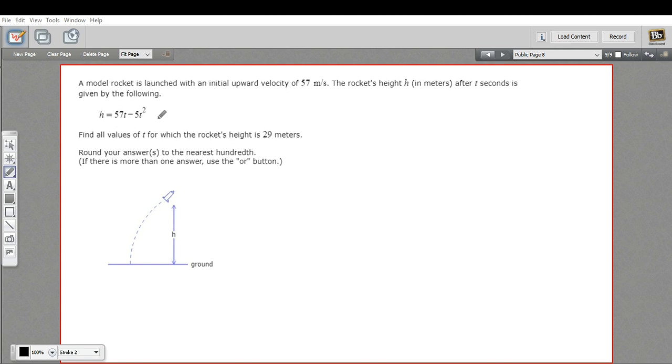Find all the values for t for which the rocket's height is 29 meters. So what that means is we're going to put in 29 for h in this equation. Instead of h, we'll have 29 here. That really does give us a nice quadratic to work with. And then we'll solve that for t. That will tell us what are the times when the height is 29.